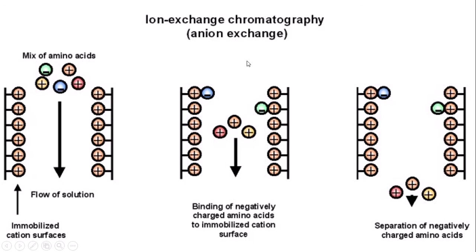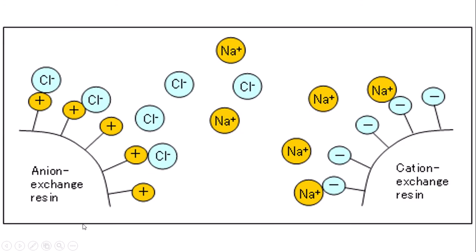As an example: with a positively charged ion exchanger and a mixed amino acid sample, only negatively charged amino acids will bind to the exchanger. The remaining amino acids pass through. The bound negatively charged amino acids are then separated using an elution process. A common example uses chloride ions attached to the anion exchanger and sodium ions attached to the cation exchanger.